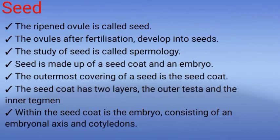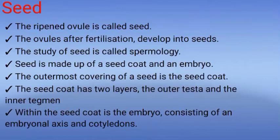Generally, a seed is made up of a seed coat and an embryo. The outermost covering of a seed is called the seed coat. The seed coat is composed of two layers: the outer layer is called testa and the inner layer is called tegmen.